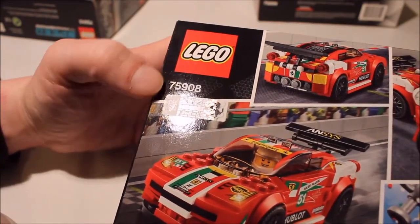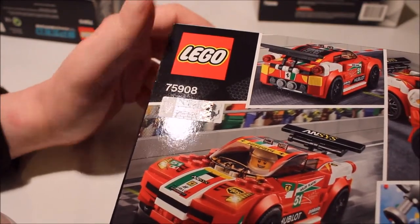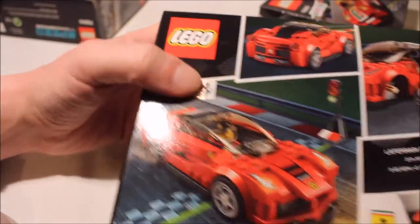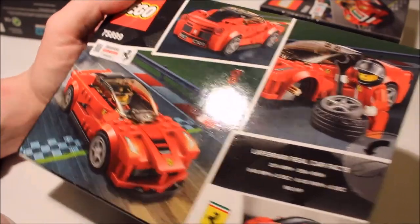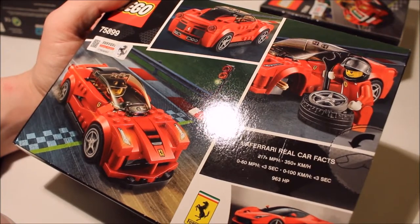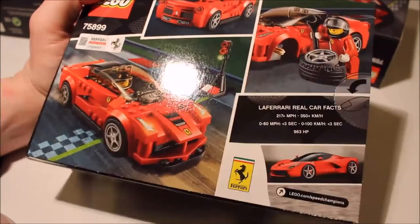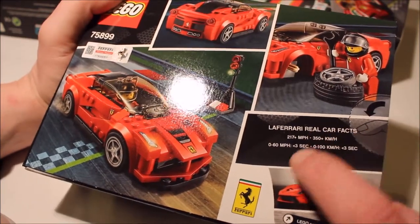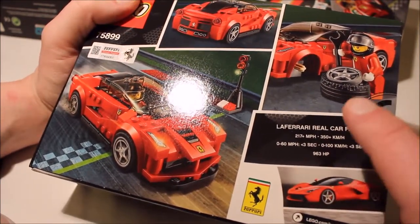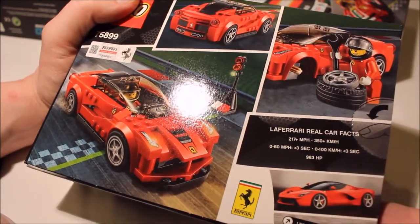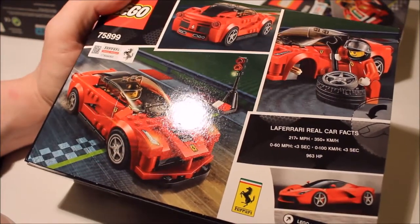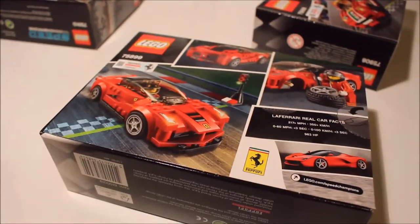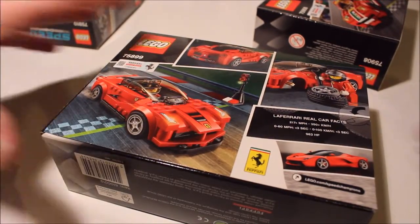One of those little sticker things I never really bother with. Now let's just see if that's repeated over here. Yes, you've got the same sort of sticker, same sort of situation. These cars always seem to be changing tires on these boxes. More real car facts: 217 miles per hour, not 60 in 3 seconds, so it's got a higher speed but takes longer to get there, 963 horsepower.